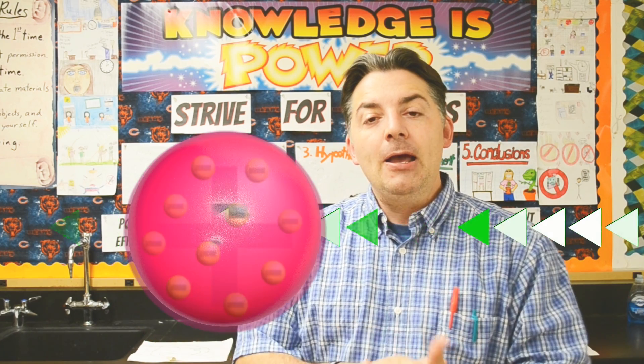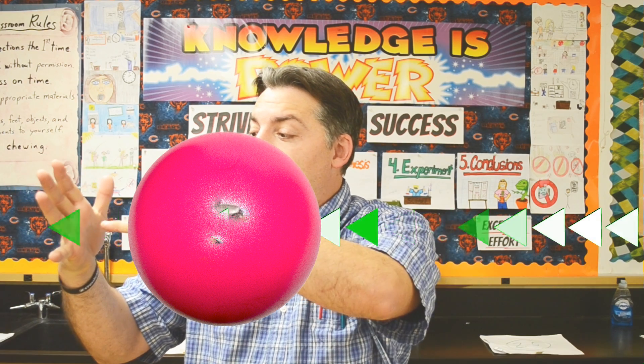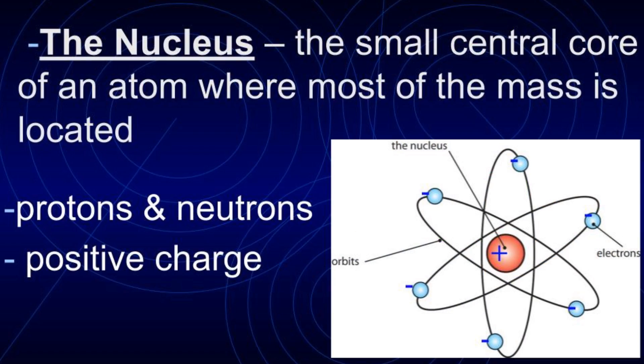He said: if Thompson's model is correct, these positively charged particles are going to shoot right through the gold foil, because if all the negative stuff is spread out in the positive stuff, that charge is too spread out to have any effect. But what happened was the positive particles hit something — something with a concentrated positive charge that repelled them. Ernest Rutherford discovered the nucleus: the small central core of an atom where most of the mass is located, made of protons and neutrons, with a positive charge. Electrons zip around the outside of that nucleus in what we call an electron cloud.